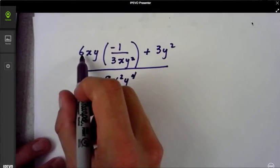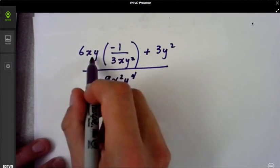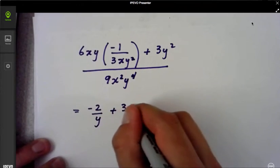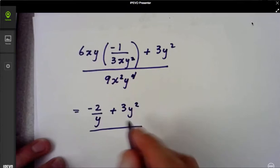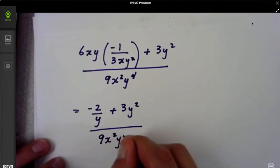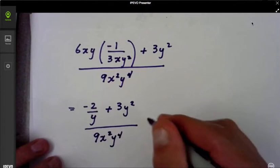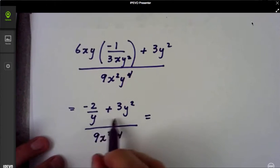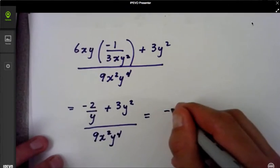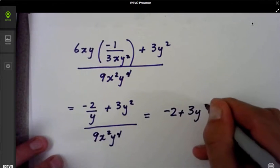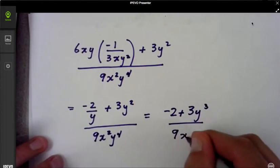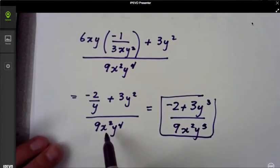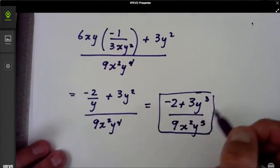So we're going to go ahead and say 6xy times y prime, which is negative 1 over 3xy squared plus 3y squared all divided by 9x squared y to the fourth. You can clean this up a little bit. We can simplify the 6 and the 2. The x and the y's are going to simplify. You get negative 2 over y plus 3y squared. This simplifies nicely. All divided by 9x squared y to the fourth. And then we can simplify even further. If you keep going and get the same denominator here and try to simplify, you end up with negative 2 plus 3y cubed over 9x squared y to the fifth. So that was a long process. You can clean this up a little bit on your own. So there is our second derivative.